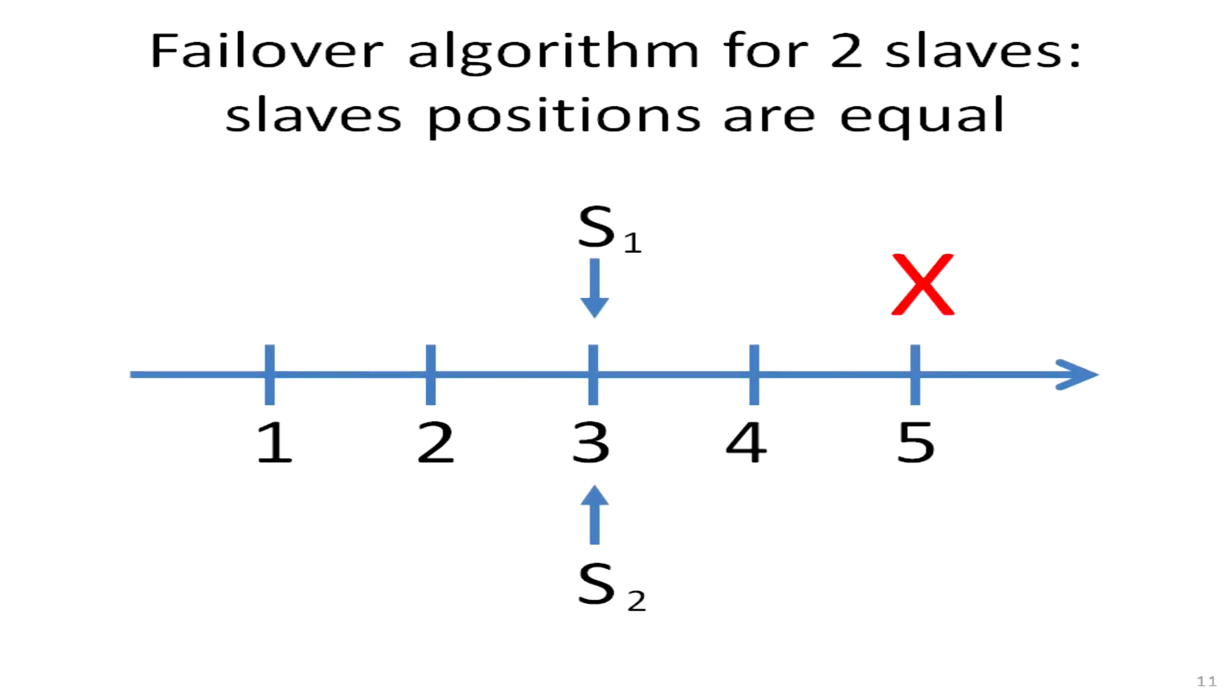I propose to start with the simple case when we have only two slaves, and then we will expand the algorithm to the case of several slaves. If we have only two slaves, then obviously there are only two alternatives for their relative positions. Either they match or differ. If the positions of the slaves match, if they are equal, then bearing in mind that nothing modifies the slaves' database except the replication, we can be sure that the data on the slaves is equal. And the problem is solved.